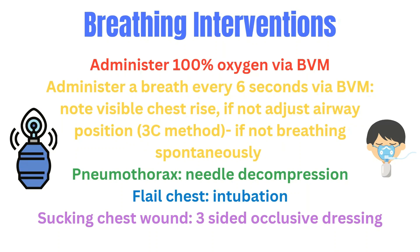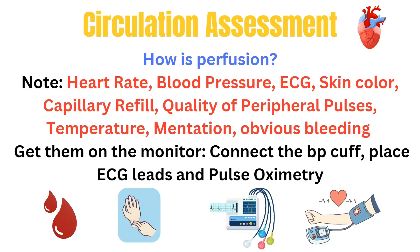Other interventions include needle decompression and chest tubes for pneumo- or hemothoraxes. Now let's get into circulation. We need to ask if the patient has good perfusion, and we assess this by looking at the patient's skin color, capillary refill, quality of their pulses, blood pressure, heart rate, ECG rhythm, signs of bleeding, and even mentation. For example, if the patient is awake and alert and speaking in complete sentences, we can assume they are getting adequate perfusion to their brain. On the other hand, if blood pressure is low, heart rate is high, cap refill is delayed, and pulses are weak, the patient may be in shock and in need of immediate interventions.